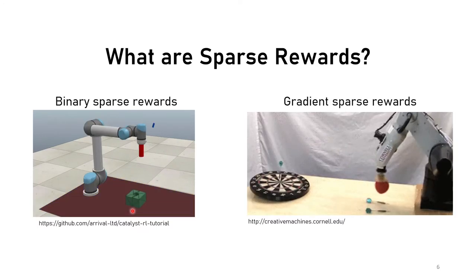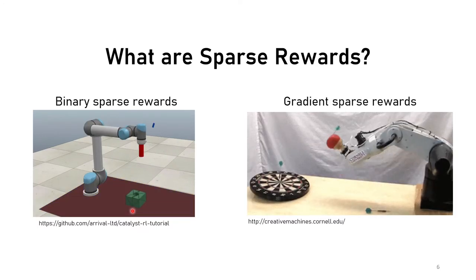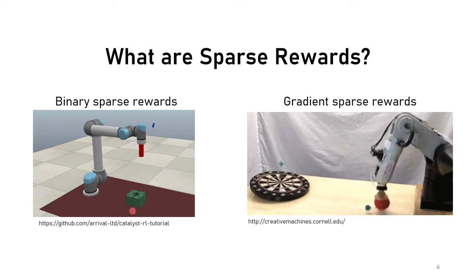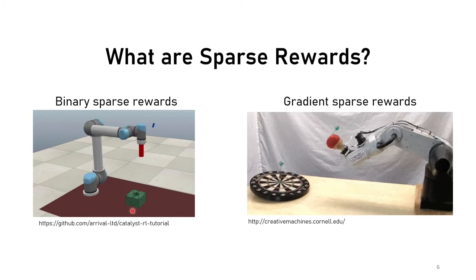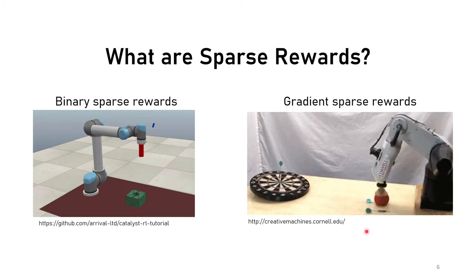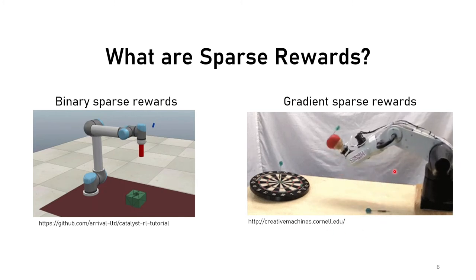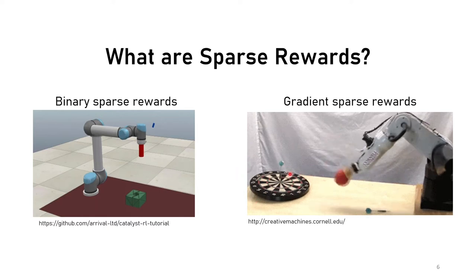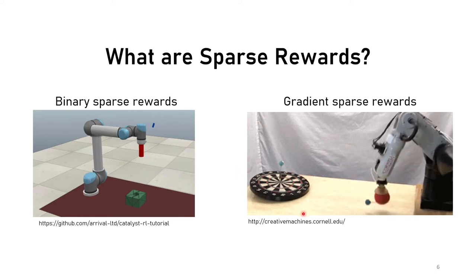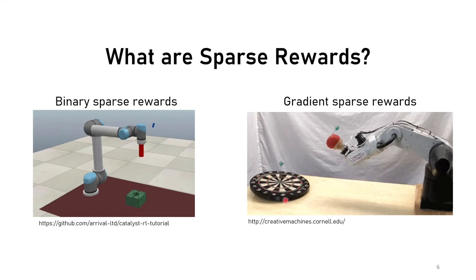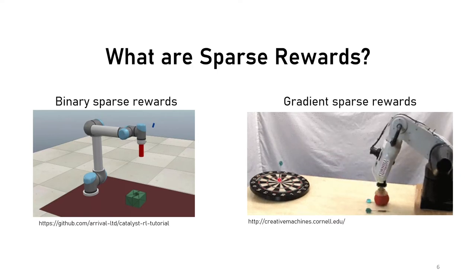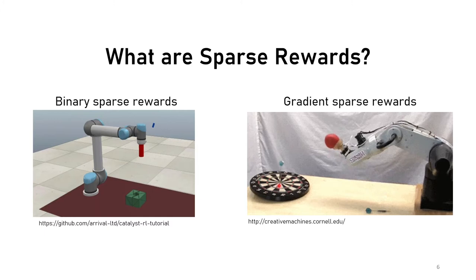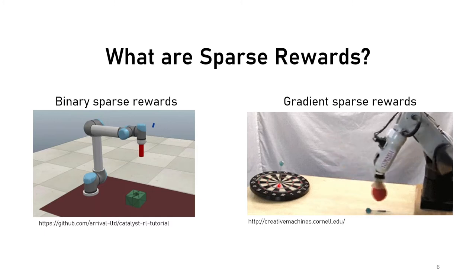The other family is what we call gradient sparse rewards, in which the reward is sparse, but once we obtain a reward, there are different levels of it. For example, a robot that has learned how to throw darts at a target: the reward is only given if the dart hits the target, but the closer the dart is to the center, the higher the reward. This means there is a gradient, and there is a way to improve on the reward.